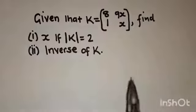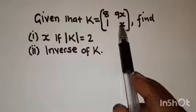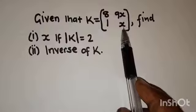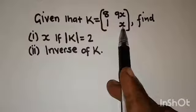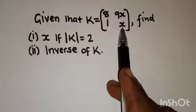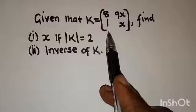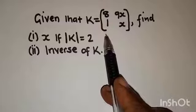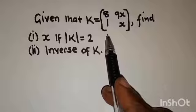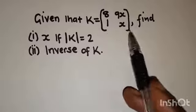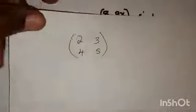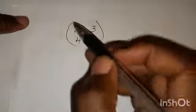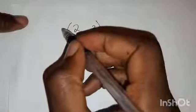So how are we going to find this missing element of matrix K? To find the value of X, we are going to use the formula for finding the determinant of a matrix. For example, let's say we have this matrix here, and let's call it matrix A.